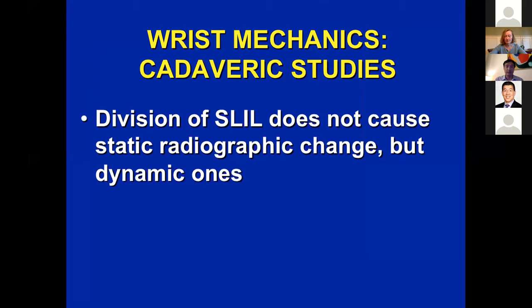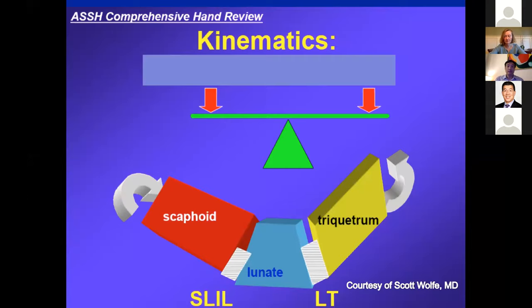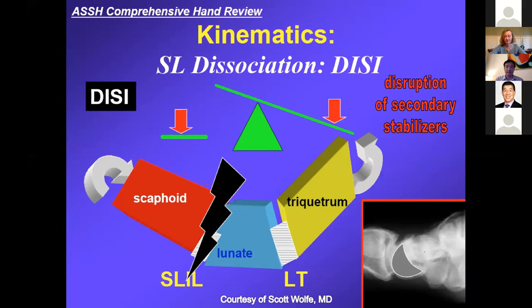These slides from Dr. Wolf show the balance of the carpus when intact. If you injure the ligament between the scaphoid and lunate but not the secondary stabilizers, you don't go into DISI. But when you disrupt the secondary stabilizers, it's out of balance and then you go into a DISI pattern.